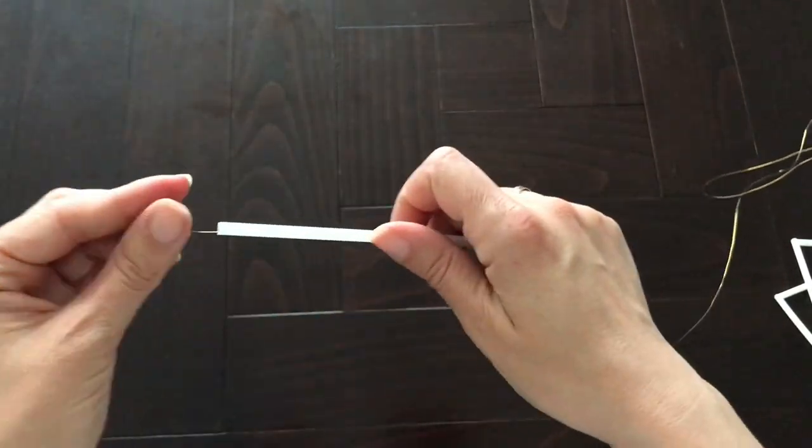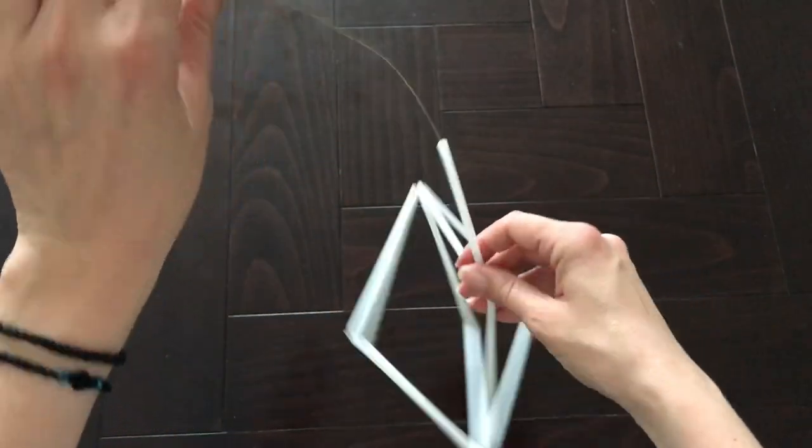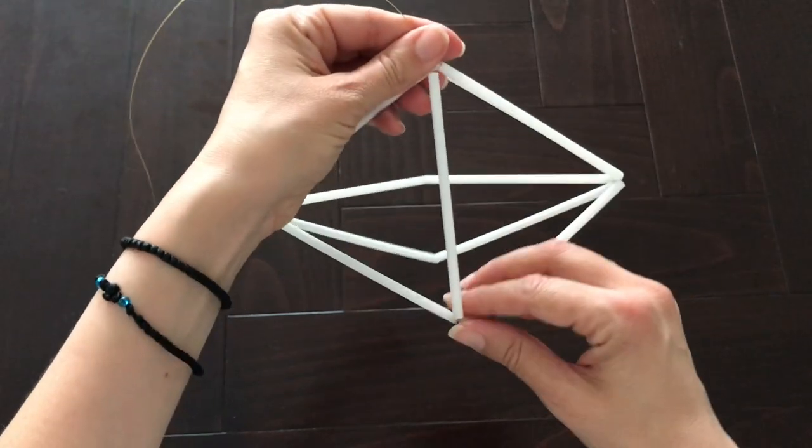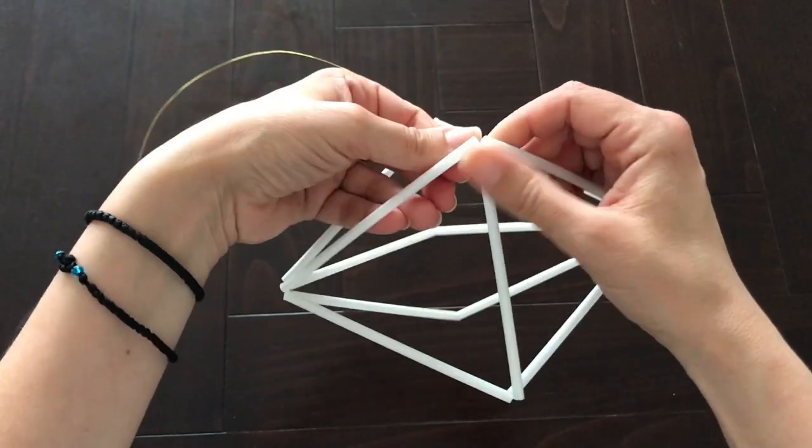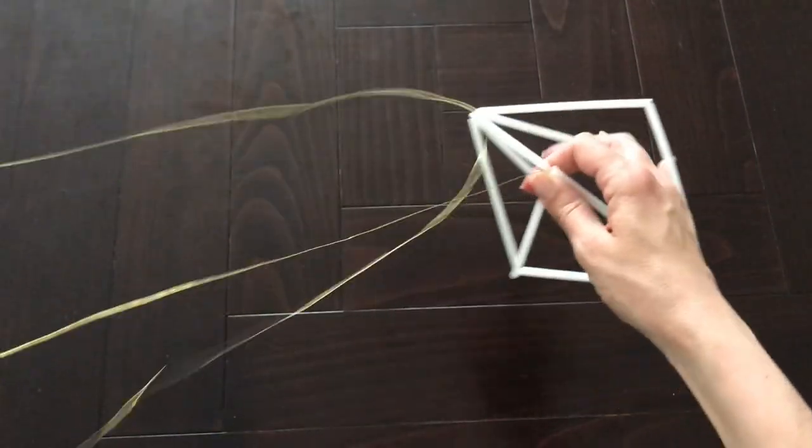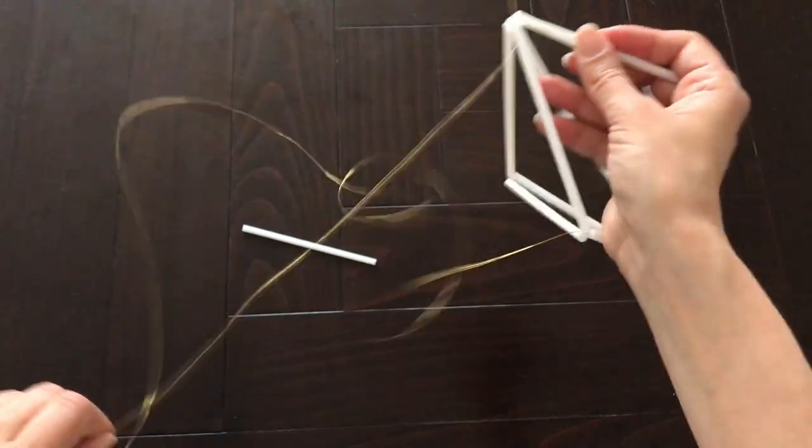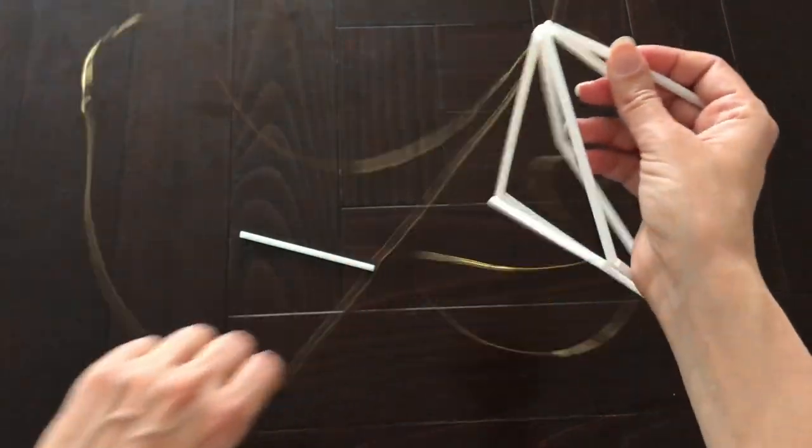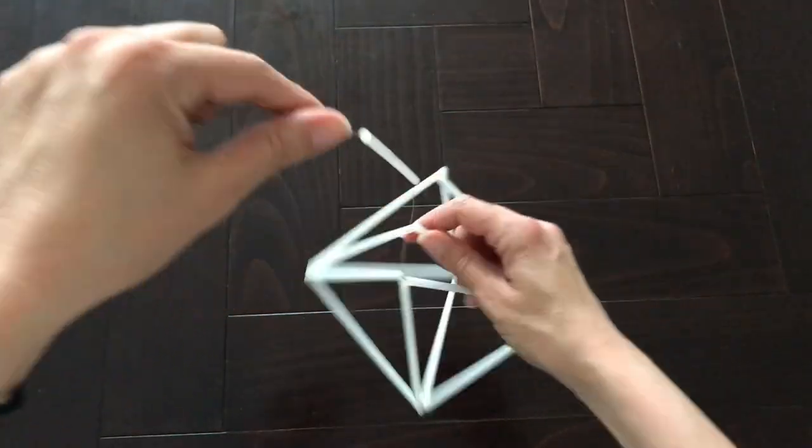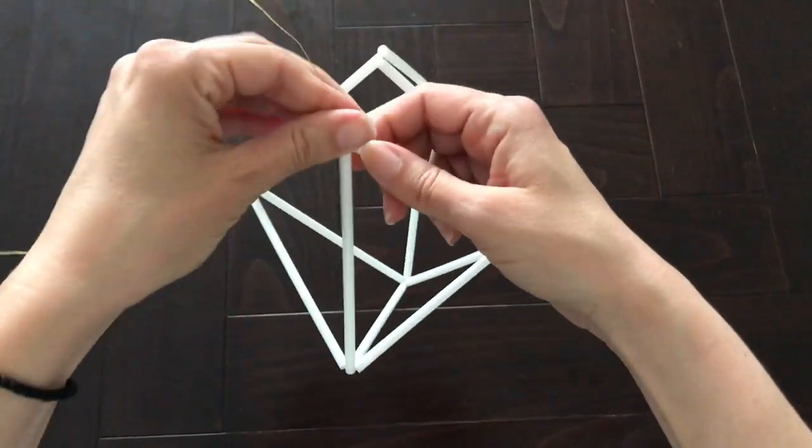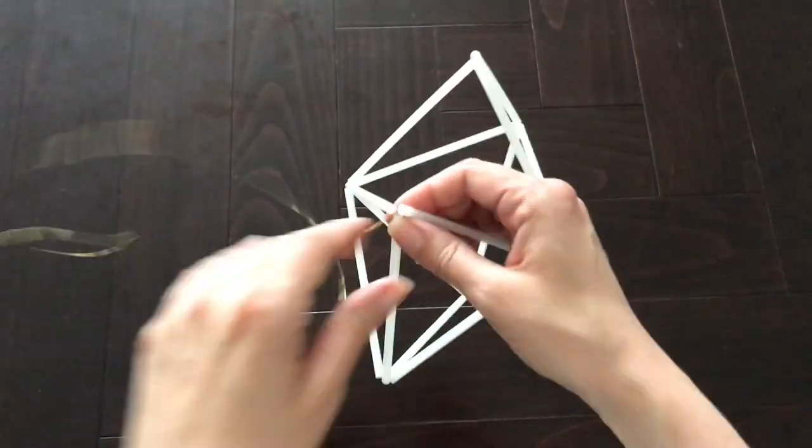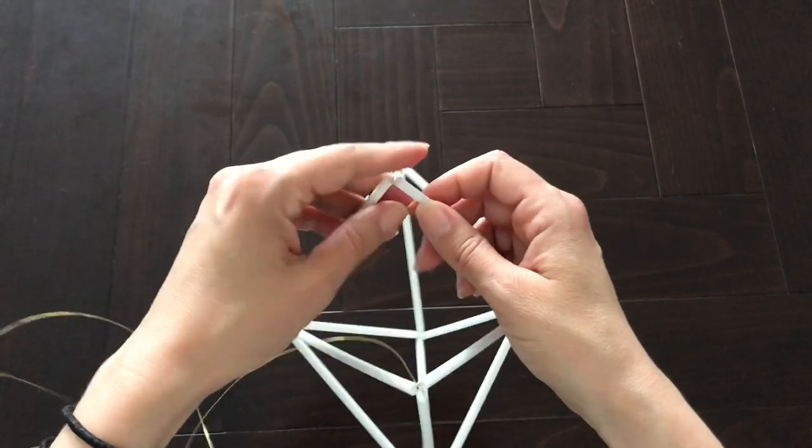Add another piece of straw and connect it as I'm showing you here, you guys. Repeat the process until you connect four sides together. You want to make sure to leave one side undone for later. You will see what I mean by that if you stick with me, guys.